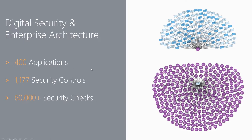To give a sense of the scale: if you have an enterprise with 400 applications and reference the NIST framework, which has almost 1,000 security controls, you're looking at around 60,000 different security checks just for applications alone, not counting other parts of the enterprise. On one hand it's a huge job; on the other, the approach is structured and digitized enough that you can come up with a proper implementation.